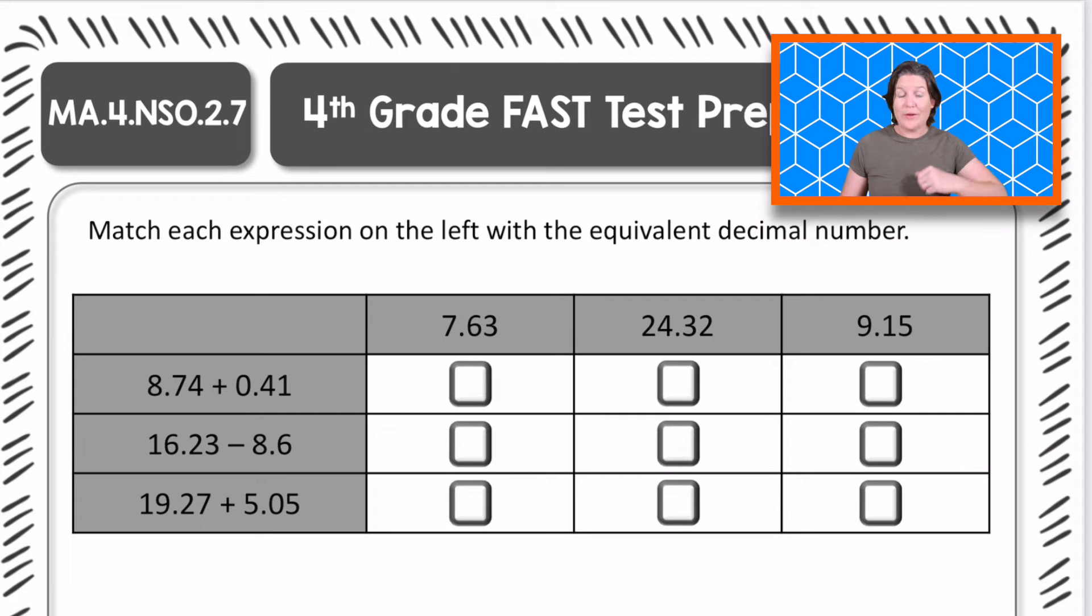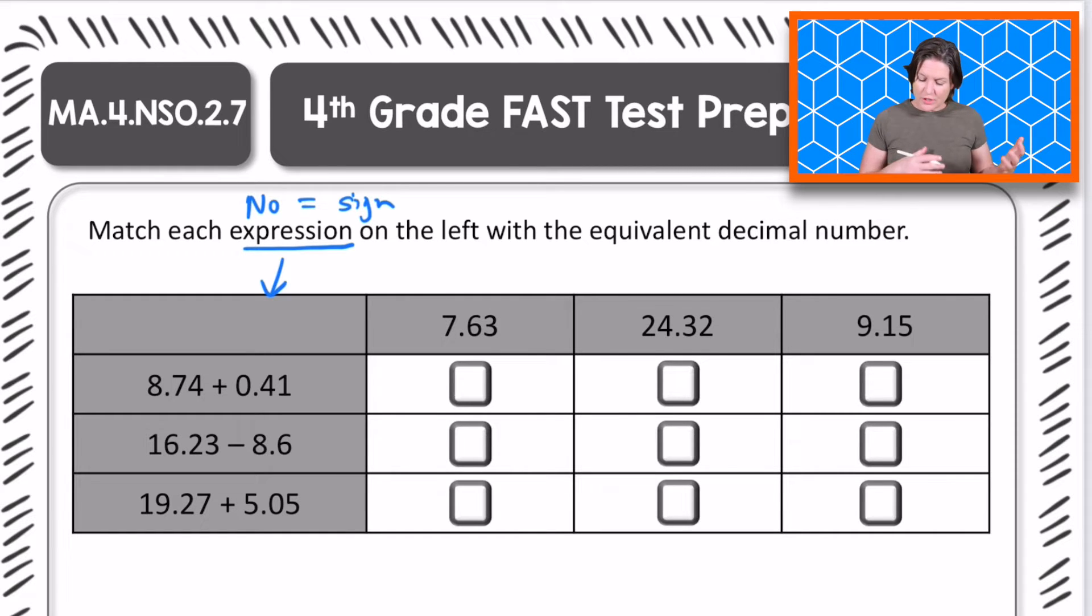Okay, fourth grade, welcome back. So it says to match each expression. If you notice down here, these are expressions because they have no equal sign present. We're considering the part that does not contain the equal sign. So match each expression on the left with the equivalent decimal number. What does equivalent mean? Equal, right, with the equivalent decimal numbers, we've got these decimal numbers right here.